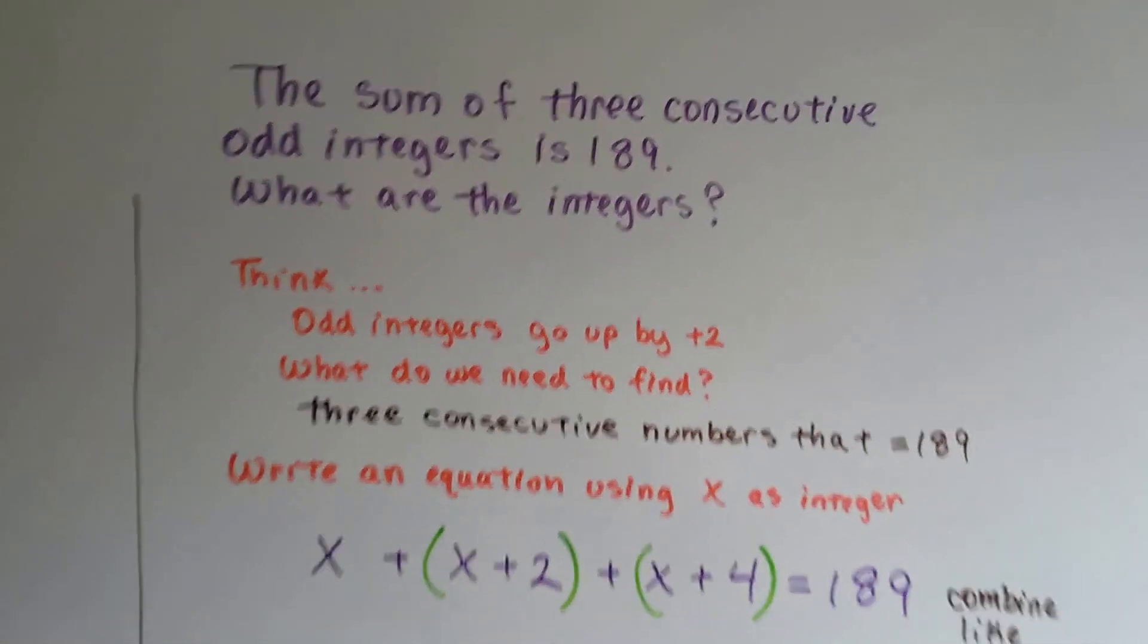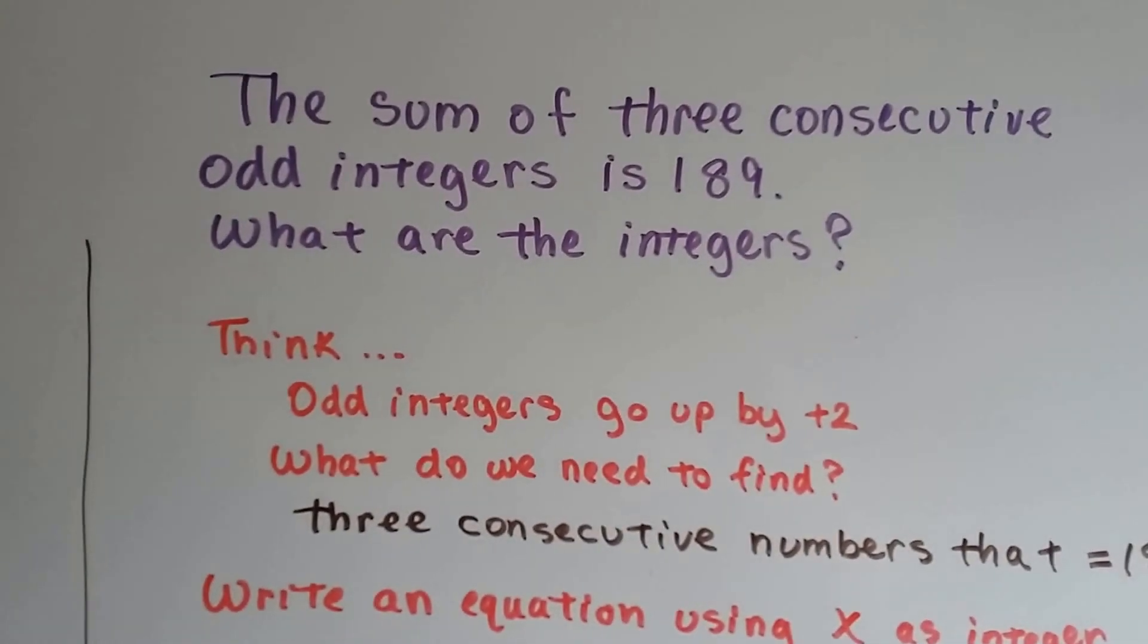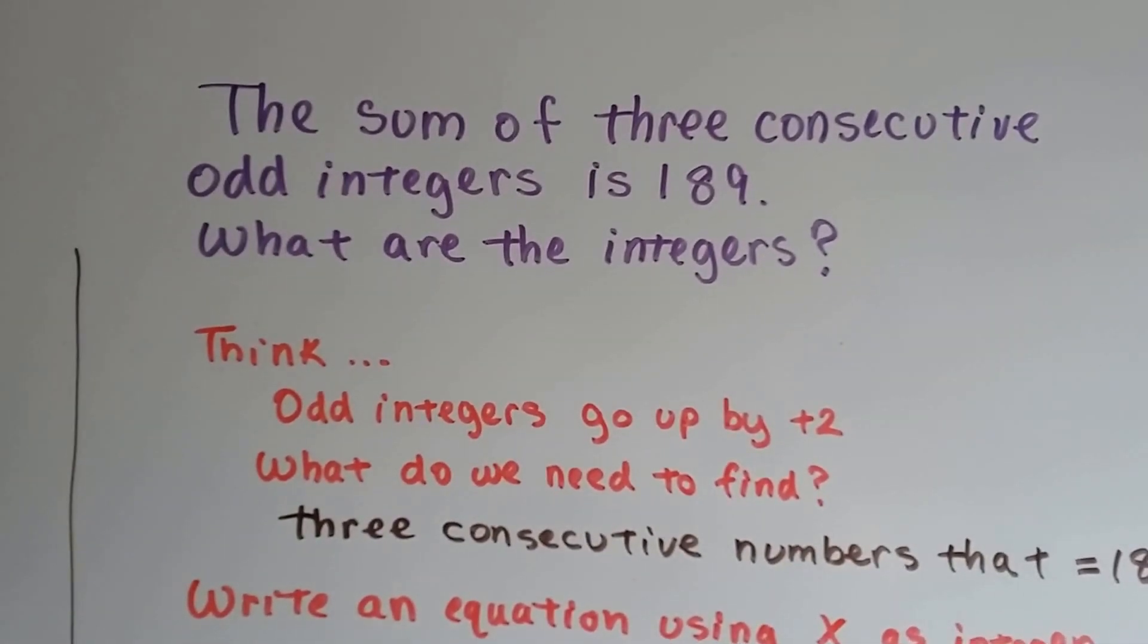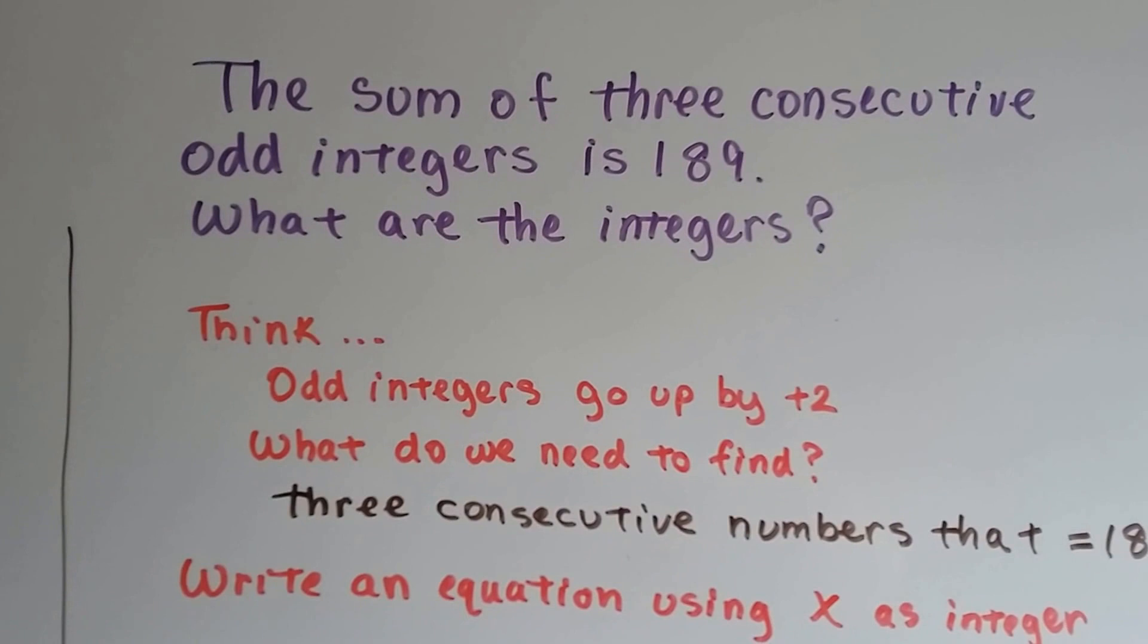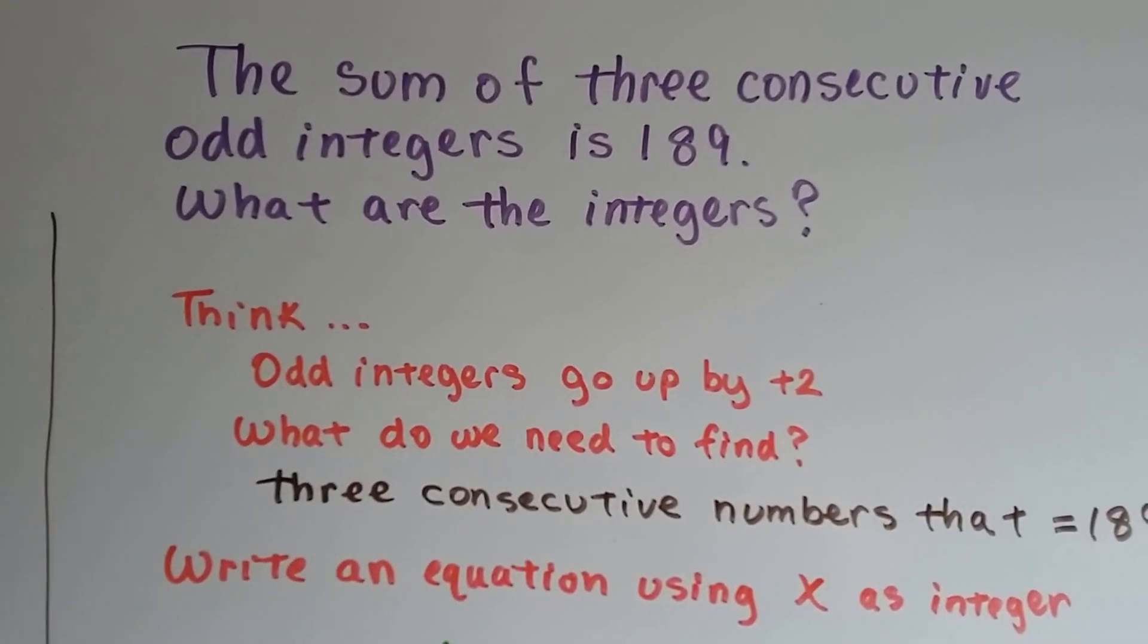Let's take a look at this one. The sum of three consecutive odd integers is 189. What are the integers? Okay. So think. Odd integers go up by 2.